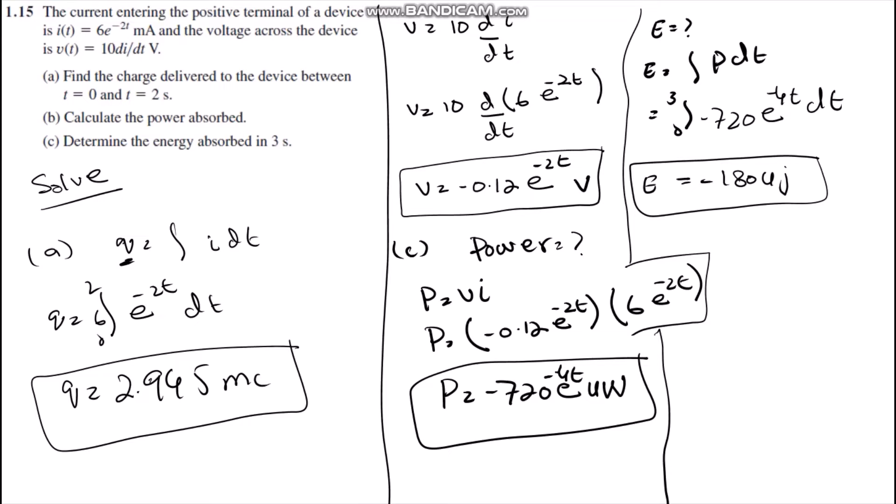Hello everyone. Today we are going to solve question number 1.15 from Fundamentals of Electric Circuits by Alexander and Sadiku. This question is very similar to question 1.14 because current and voltage are given. The question demands: find the charge delivered to the device between 0 to 2 seconds, calculate the power absorbed by the element, and determine the energy absorbed in 3 seconds by the element.